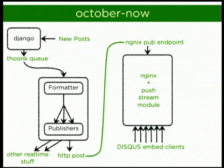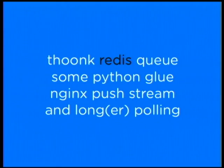Looking into the technology behind those boxes and arrows: the Django web app in the upper left uses post_save and post_delete hooks to put stuff on the queue. The Thunk queue is a library on top of Redis. The backend does pipelining — subscribing to that queue, doing computation, and publishing to others who want it. And Nginx push stream is that front-end cluster.